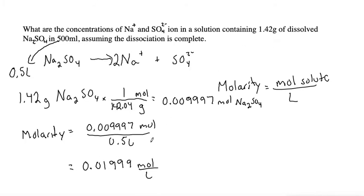And rounding to three sig figs would round to this nine here, which would give us 0.0200 molar Na2SO4.